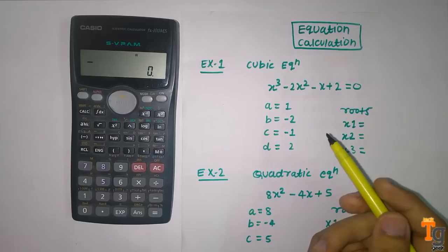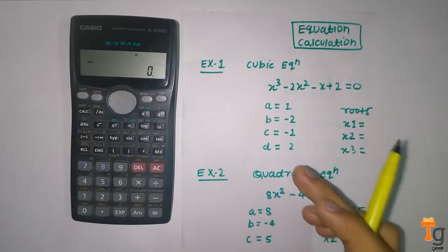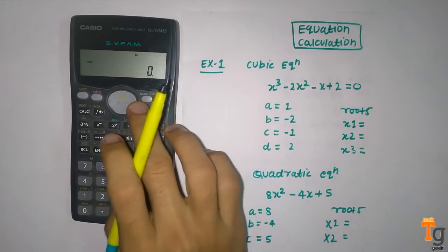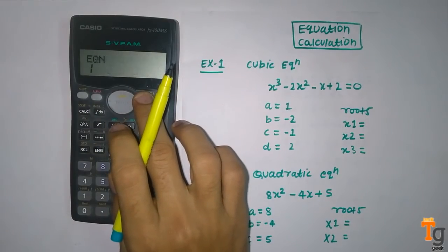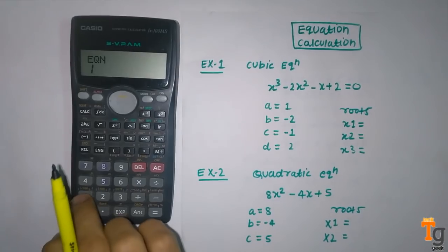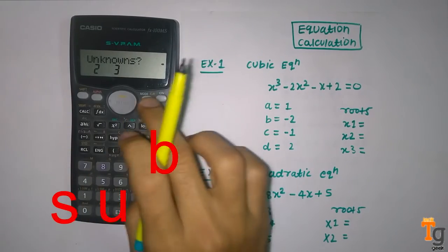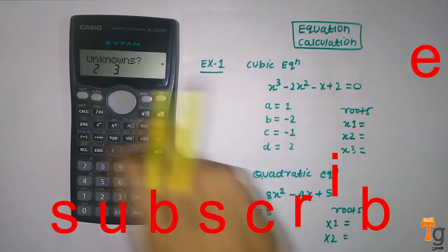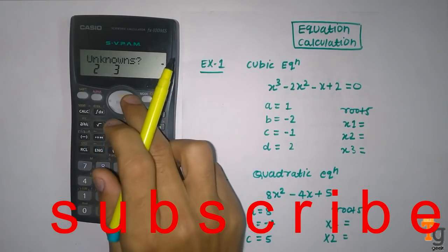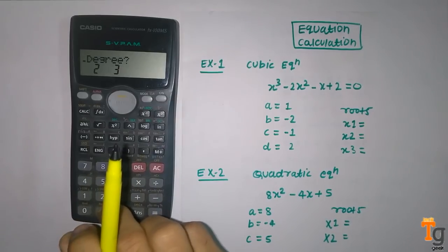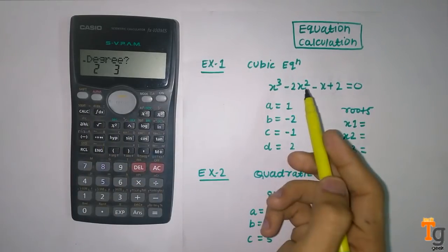Now see how I solve it. Press the mode button until you find equation sign, then press 1. This equation is in the form of degree, so simply press this here, it will convert here. Our problem is form of degree 3, so press 3.